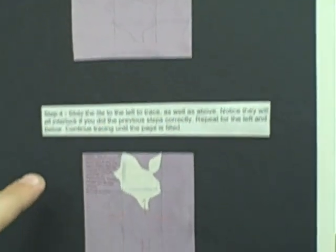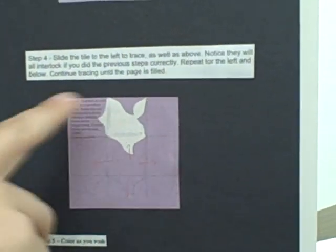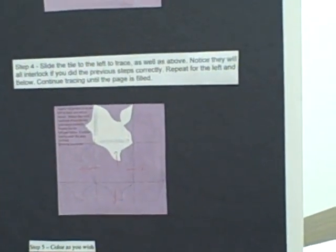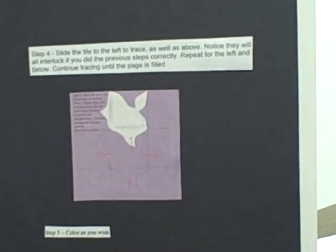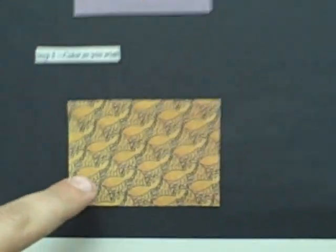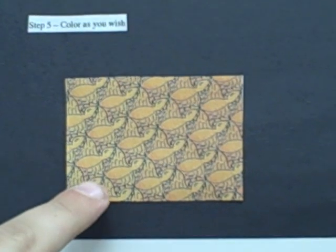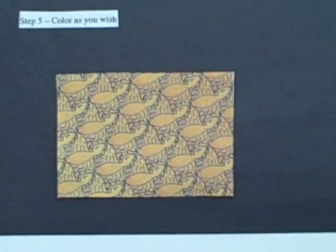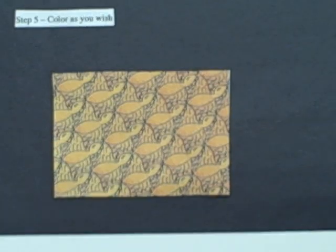Your step four is what I just said. You're going to slide it over and over until you have the size that you wish. Step five, you can color and create whatever you want. In this one, it looks like they created little birds, and it's just up to your imagination after that.